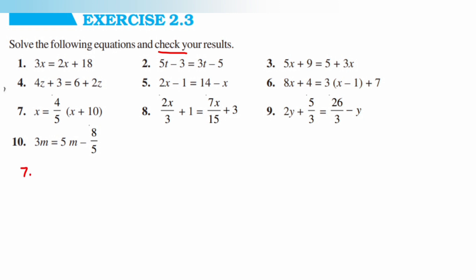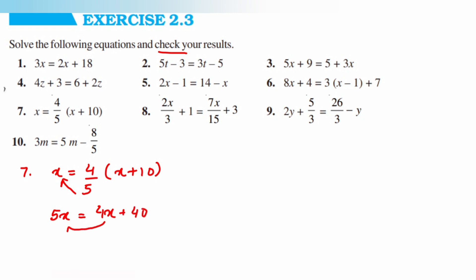The seventh question is x is equal to 4 upon 5 into (x plus 10). We'll transpose 5 to the left side — since 5 is in division it comes into multiplication — giving 5x is equal to 4 into (x plus 10), which expands to 4x plus 40. Transposing 4x to the left gives 5x minus 4x is equal to 40, so x is equal to 40.